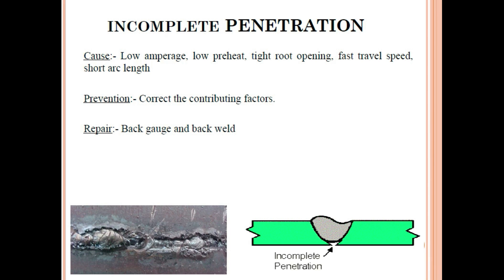Incomplete penetration occurs when the root of the weld is not fully fused. Causes include low amperage, low preheat, tight root opening — for example, if the WPS requires 2 mm root opening and you use 1 mm, penetration will be insufficient — and fast travel speed. Prevention: correct the contributing factors — amperage, preheat, root opening, and travel speed — all must be controlled as per the WPS. Repair: back gouge and back weld.